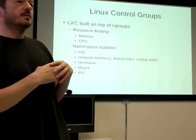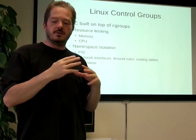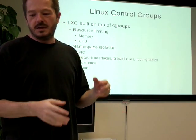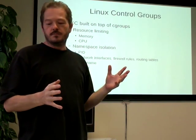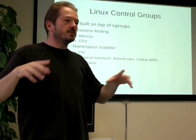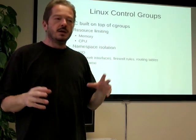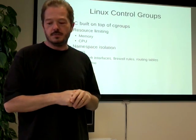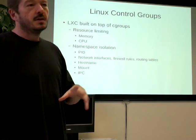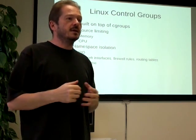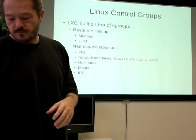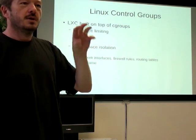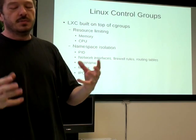Containers take it much further. You namespace the process IDs, network interfaces, the mount — which the file system points into — and inter-process communication, so that only processes within the container talk to each other. The other one on the list is the hostname, so it has its own idea of what the hostname is. So it looks like an operating system inside a container, but it isn't.